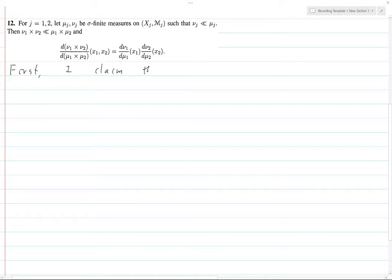First, I claim that if ν_j is mutually singular with respect to μ_j for j equals one to two, then this thing is really singular with respect to this. I mean, of course I could have also written i equals one to two, but whatever you prefer.